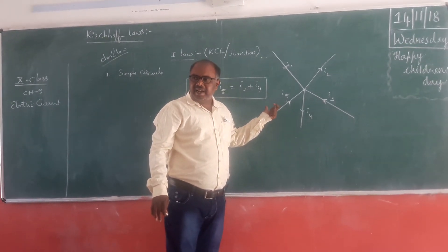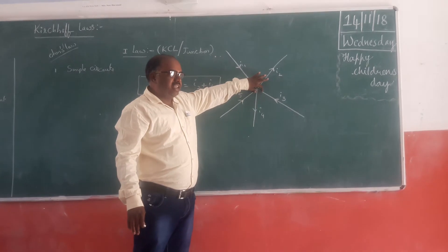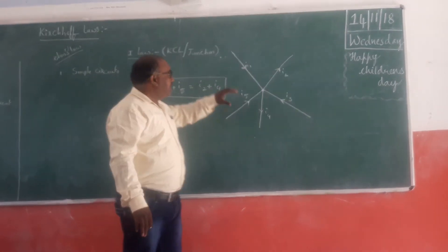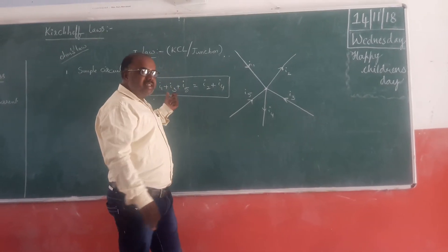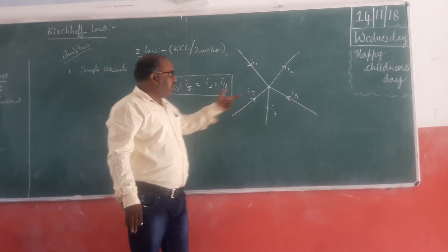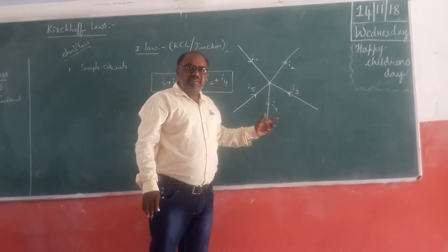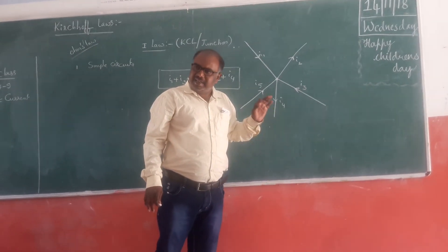The net current flow at the junction: the sum of currents coming towards the junction is equal to the sum of currents leaving the junction.